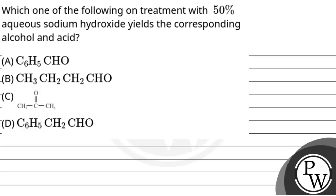Hello, let's read this question. The question says, which one of the following on treatment with 50% aqueous sodium hydroxide yields the corresponding alcohol and acid? Options A, B, C, D are given. The key concept for this question is the Cannizzaro reaction.